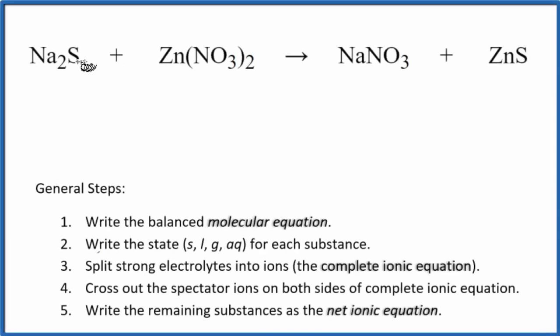In this video, we'll write the balanced net ionic equation for Na2S plus Zn(NO3)2. This is sodium sulfide plus zinc nitrate. First thing we have to do is balance the molecular equation. This is our molecular equation.